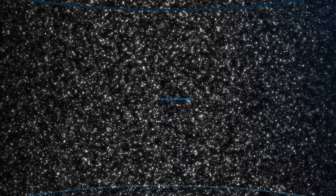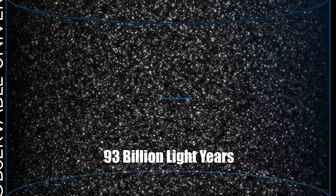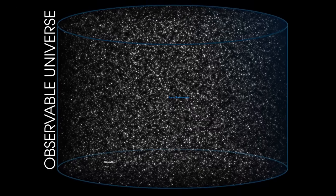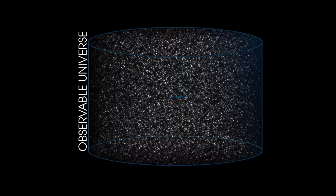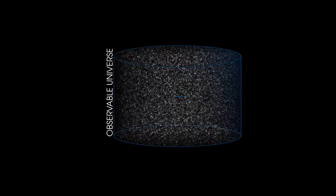As we reach the boundaries of our cosmic exploration, we encounter the limits of the observable universe, an astronomical marvel stretching about 93 billion light-years in diameter. This begs a fascinating question. If the universe is only 13.8 billion years old, how can it be so vast? The answer lies in the nature of cosmic expansion.